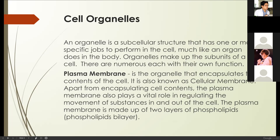The plasma membrane also plays a vital role in regulating the movement of substances in and out of the cell. In your higher years of biology, you will discuss how substances move in and out of the cell through the plasma membrane. Remember that the plasma membrane is made up of two layers of phospholipids — a phospholipid bilayer — which consists of phosphorus and lipids, meaning phosphorus and fats.